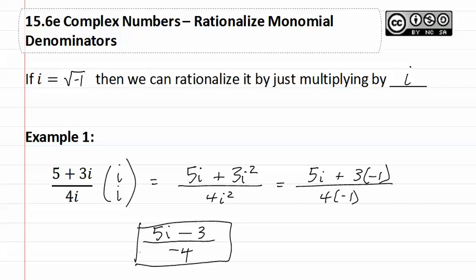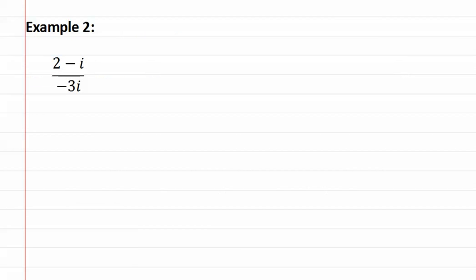Let's look at another example of rationalizing a monomial denominator. Here's example two. Let's multiply it by i. This will give us 2i minus i squared over negative 3i squared.